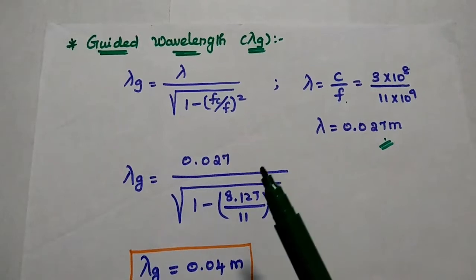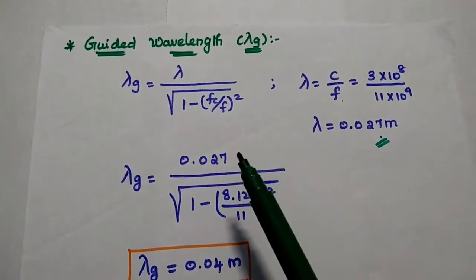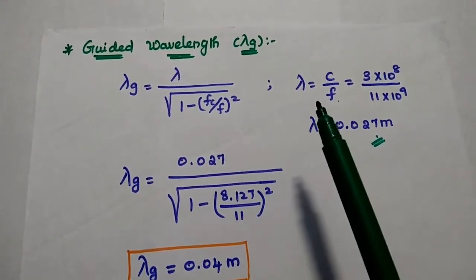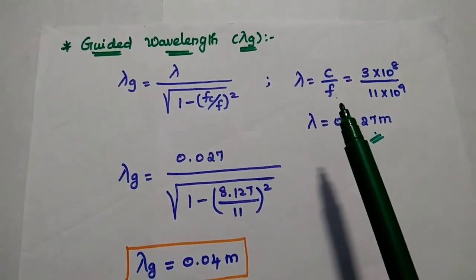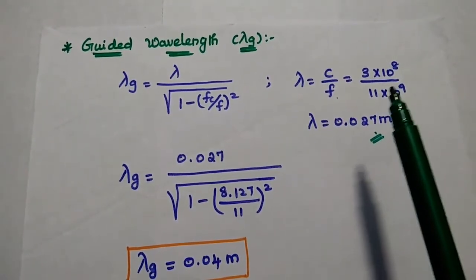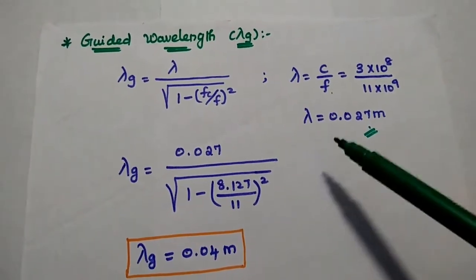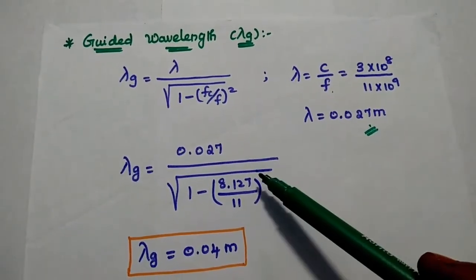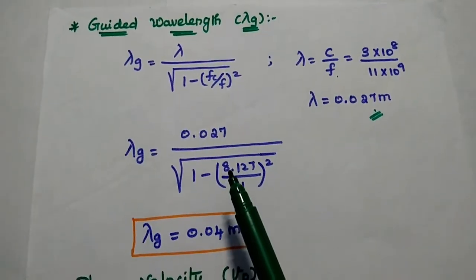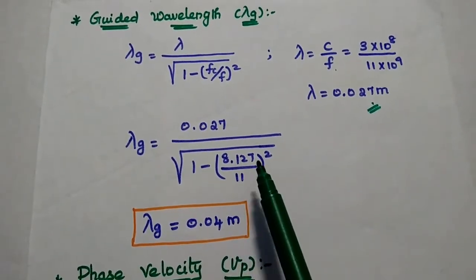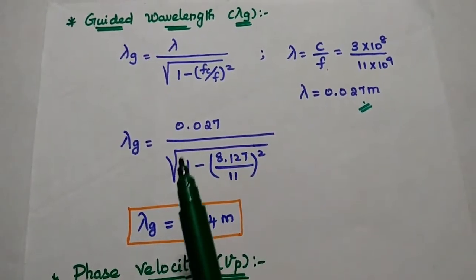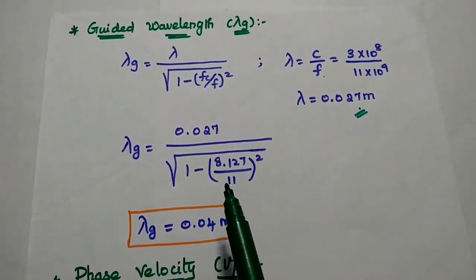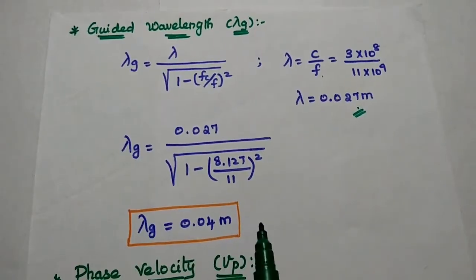Next we find the guided wavelength lambda_g = lambda / sqrt(1 − (f_c/f)²). First, lambda = c/f = (3×10⁸) / (11×10⁹) = 0.027 meters. Substituting with f_c = 8.127 GHz: lambda_g = 0.027 / sqrt(1 − (8.127/11)²) = 0.04 meters.